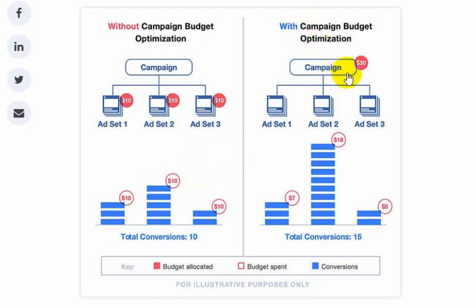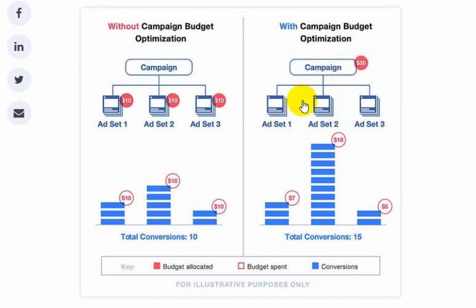Now look at the right side. You're spending thirty dollars for the whole campaign, rather than ten dollars for each ad set. So Facebook is going to do some great work here — Facebook will look at the performance of each ad set, one, two, and three, and figure out what targeting and what audience is doing really great. Facebook is going to spend the maximum amount of money on that particular best-performing ad set.